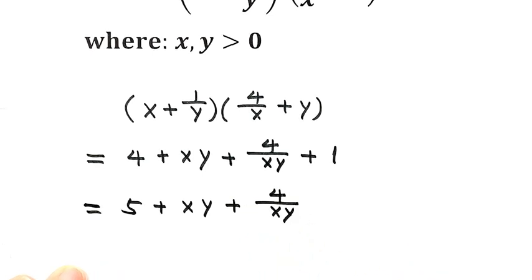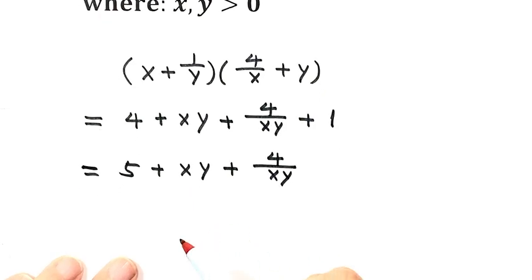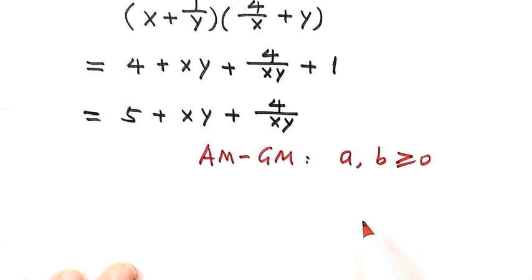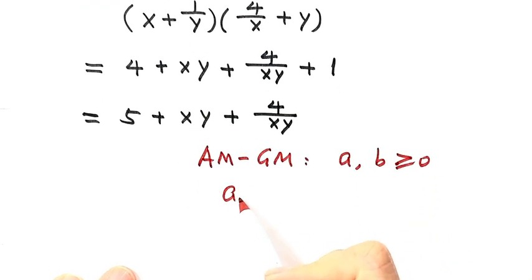Next, we can use the AM-GM inequality. So the AM-GM inequality says if both a and b are bigger than or equal to zero, then the arithmetic mean a plus b divided by 2 is bigger than or equal to the geometric mean, square root of a times b.